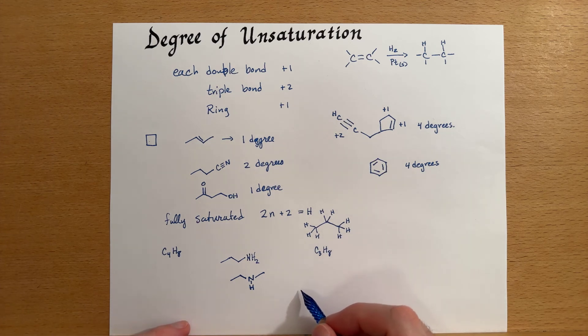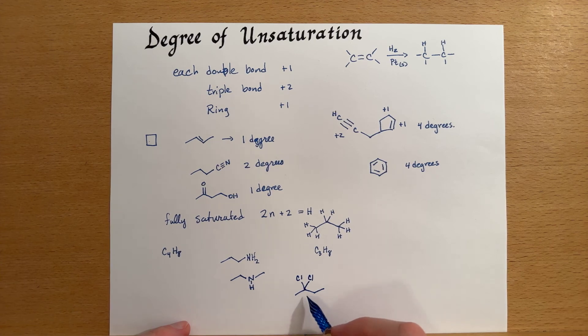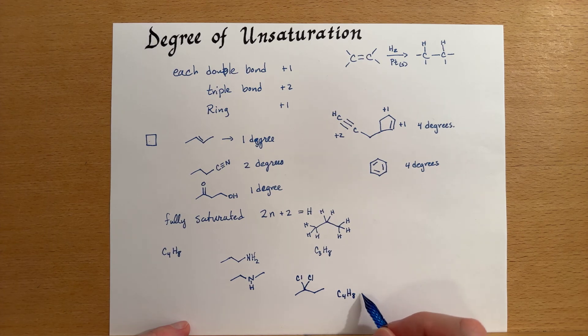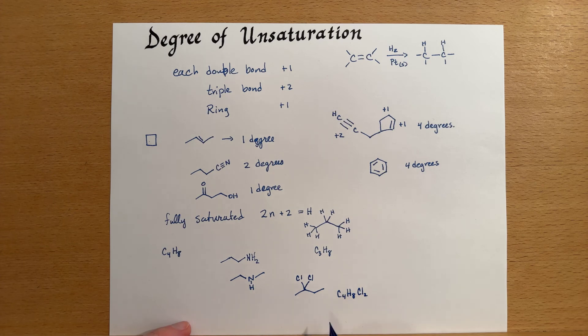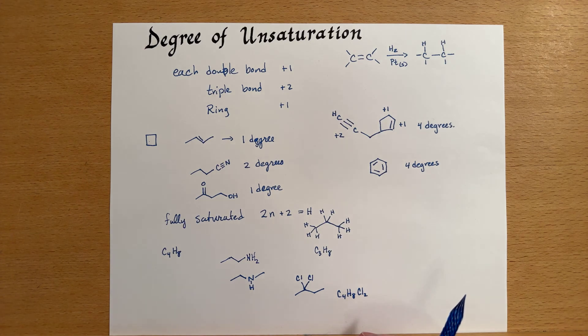One other thing that I should note is here's a chemical formula. This is C4H8Cl2. And this is a fully saturated molecule. And so you don't just look at the hydrogens. You also look at other atoms that are on it. And things like halogens, at least for this calculation, directly substitute for hydrogens.